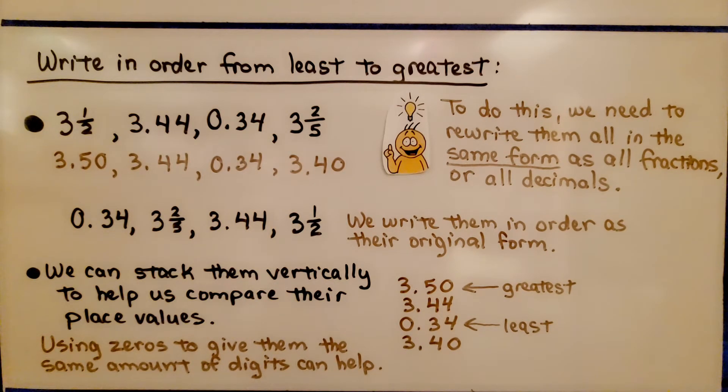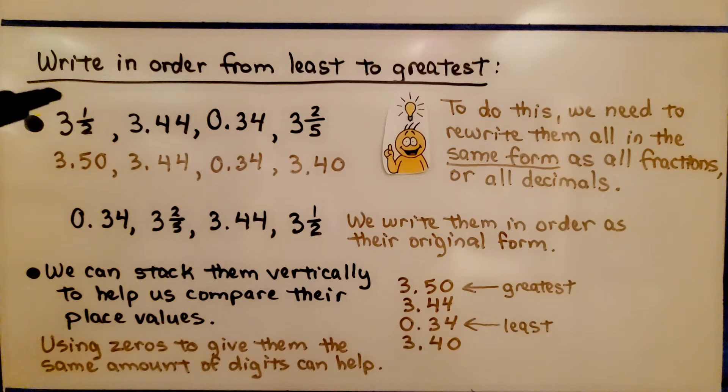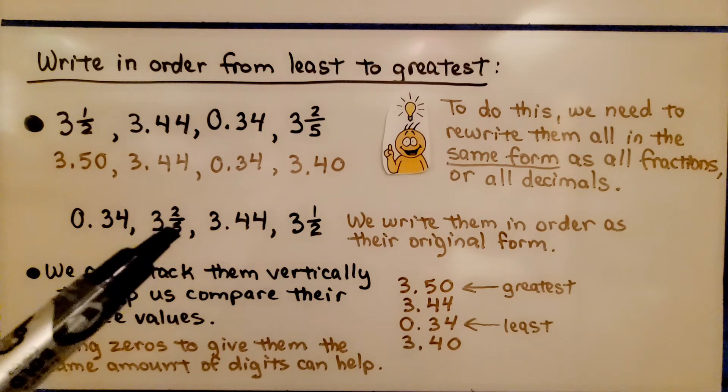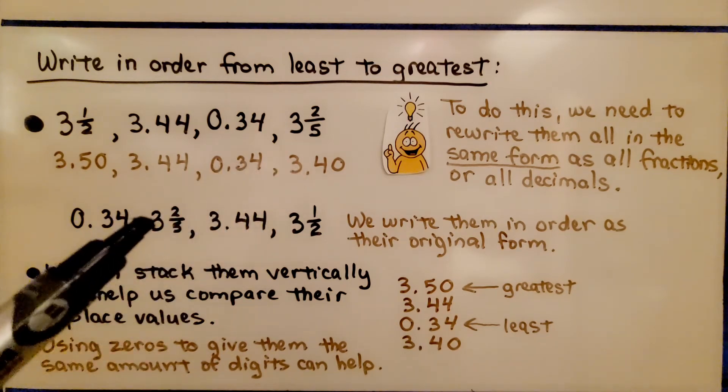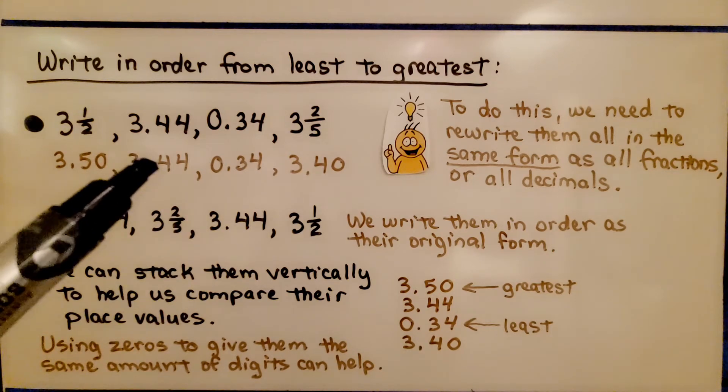We write them in order as their original form. We don't write them in order in their decimal form, we write them in their original form. So the least would be 34 hundredths, then 3 and 40 hundredths, then 3 and 44 hundredths.